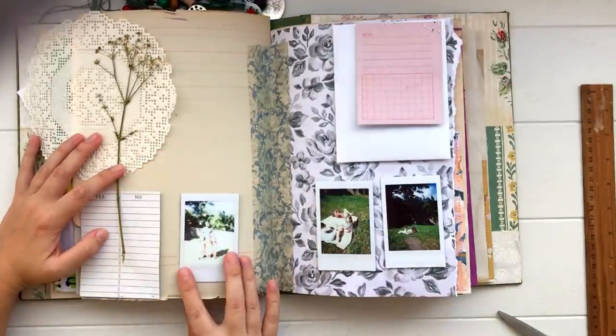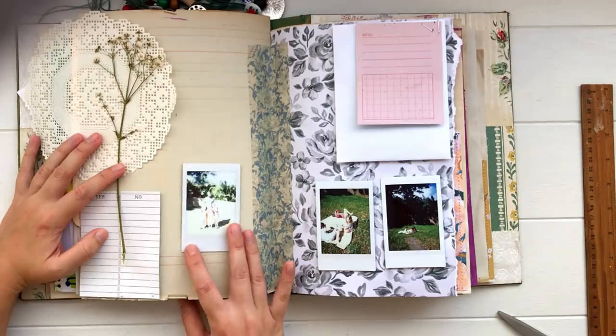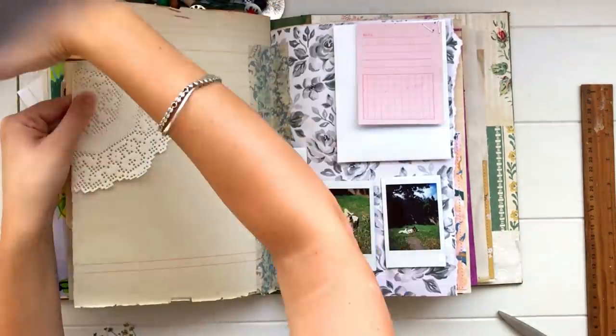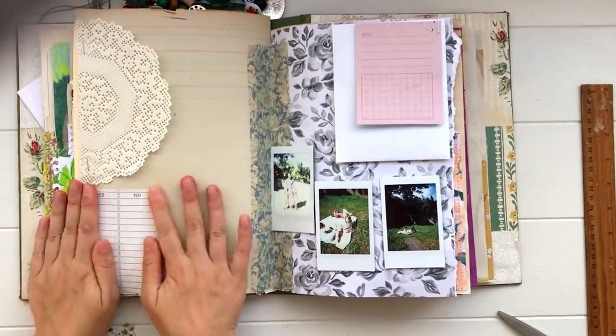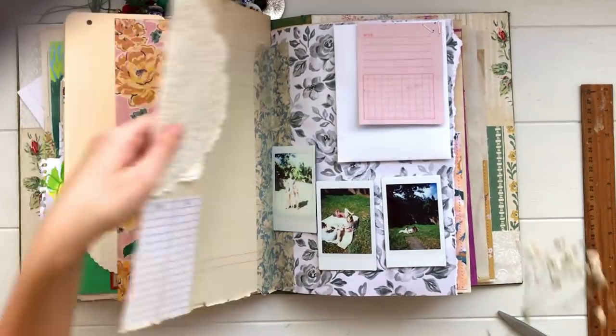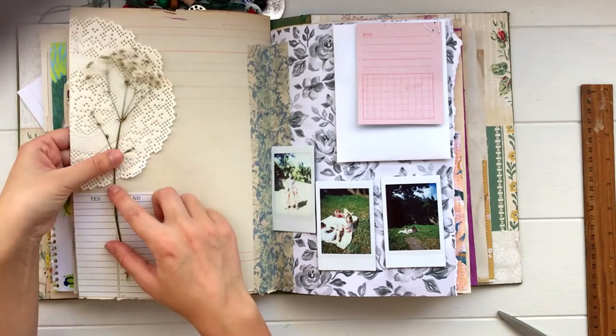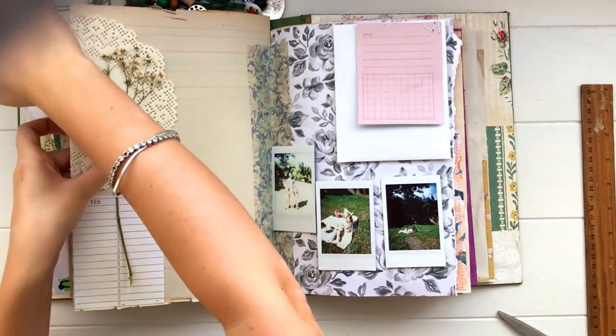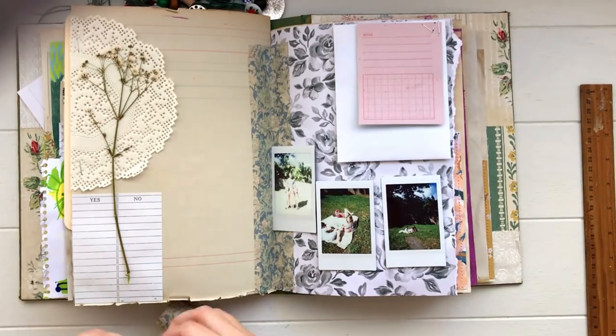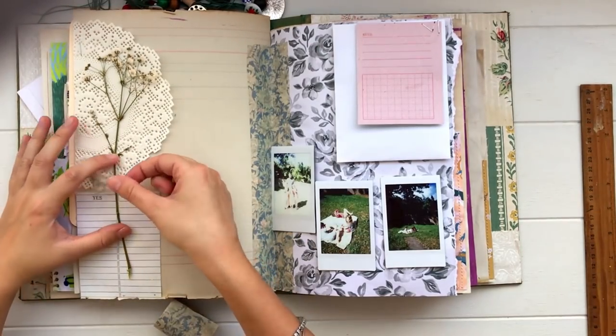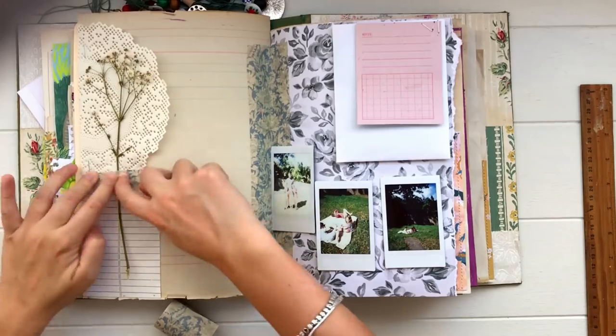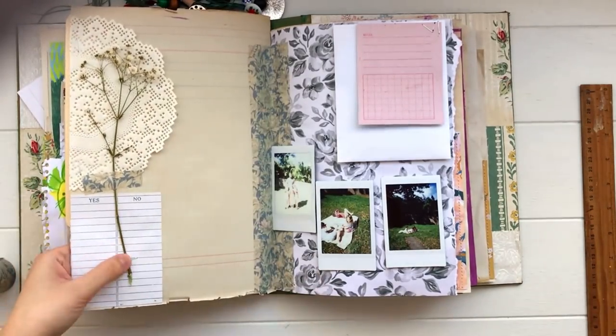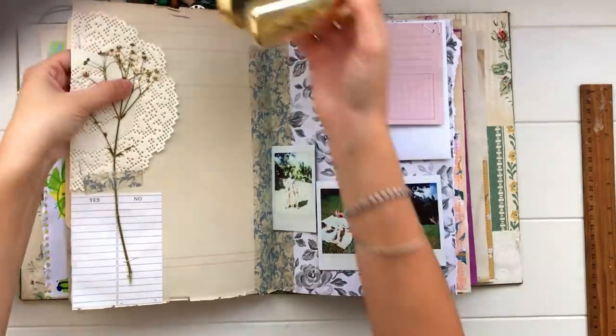Then I thought that pressed flower would look really pretty sitting on top of that vintage doily. I'm using my stapler—I wanted to put a staple through the middle but it couldn't reach, so I put a bit of that same pattern tape across the middle. Then I'm going to add a staple along the bottom and the top of that flower just to make sure that it's stuck really well to the page.